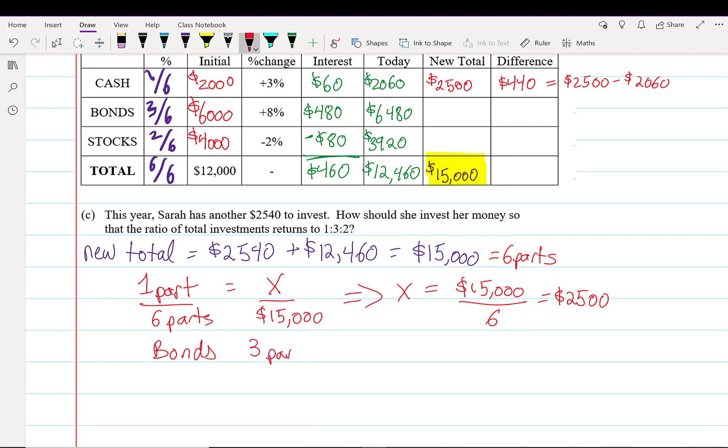For bonds, we have three parts, which is going to be $2,500 × 3. Or if you prefer, it's $15,000 × 3/6. Either way, we get $7,500.